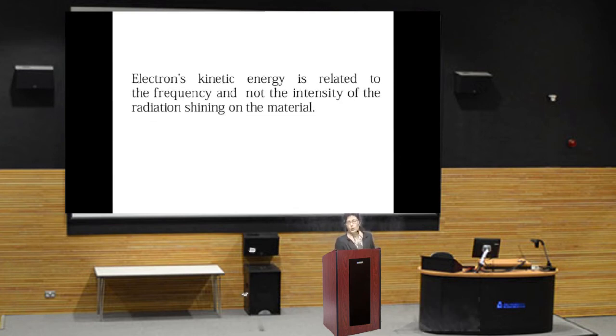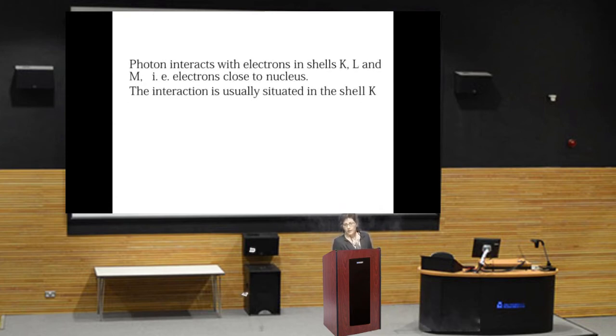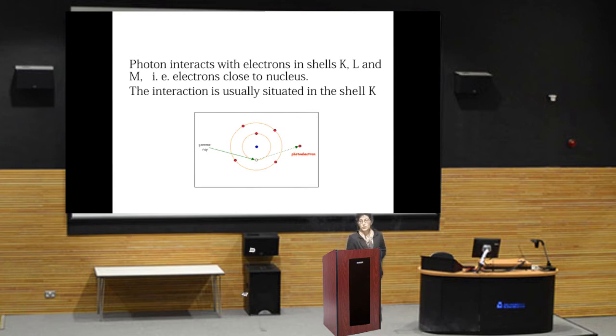Experiments showed that electron's kinetic energy is related to the frequency and not the intensity of the radiation shining on the material. Photons interact with electrons in shell K, L, and M, meaning electrons close to the nucleus. The interaction is usually situated in the K shell.